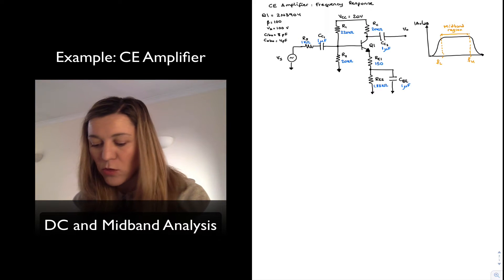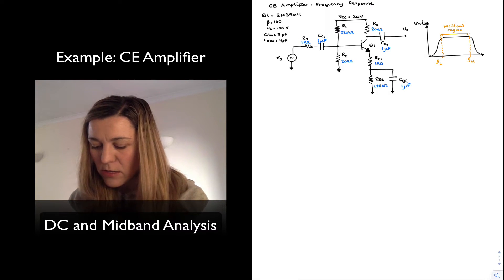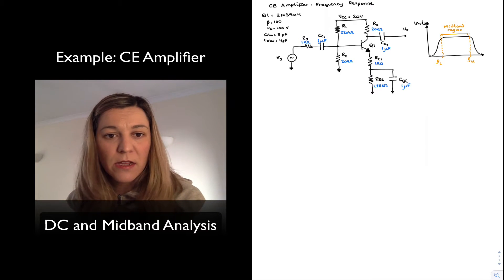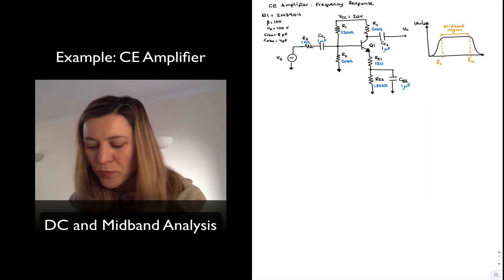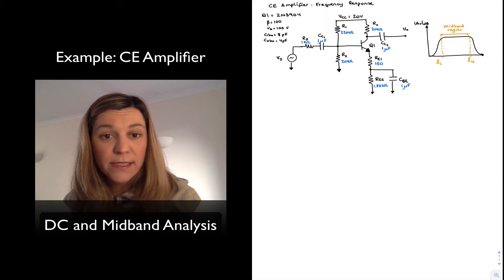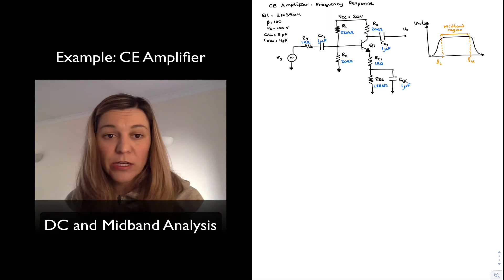So I have drawn a common emitter amplifier. Notice that it has the input from the signal source VS being fed into the base. The output is taken out of the collector. Both input and output are being fed via coupling capacitors CC1 and CC2. We have a four resistor biasing network comprised of R1, R2, RC and RE.